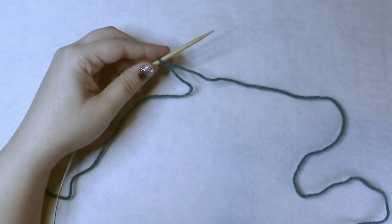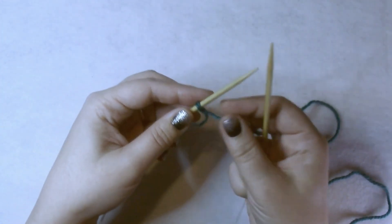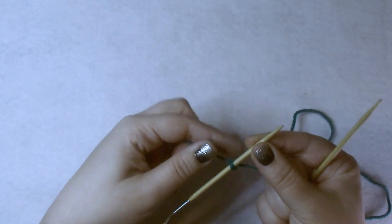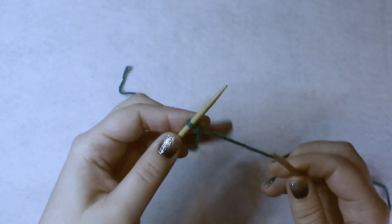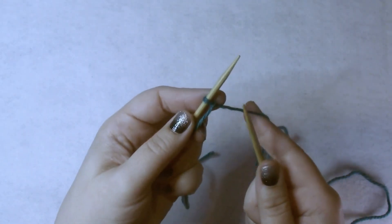The cable cast on starts the same way as the knit cast on until you have two loops on your hook, and then two stitches on your hook. Then it changes a little bit. So to begin the cable cast on...